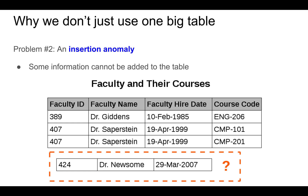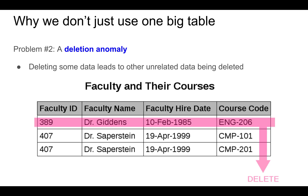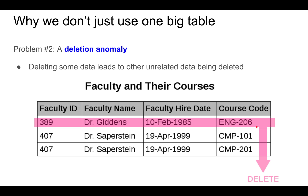An insertion anomaly occurs when information cannot be added to the table. For example, let's say there's a new professor, Dr. Newsome, who is hired but has not been assigned to teach any courses yet — then you can't store this faculty's information in the table. Finally, a deletion anomaly occurs when deleting some data leads to unrelated data being deleted. For example, if Dr. Giddens is no longer assigned to teach this course because perhaps it was cancelled, then we no longer have the faculty member's ID or faculty hire date anymore in the system.